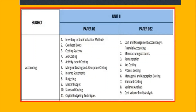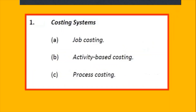Now we'll look at the costing systems and include income statements in that. We'll be looking at this in terms of traditional costing systems and new costing systems. The only new costing system here is Activity Based Costing. Job costing, marginal, and absorption costing are the traditional costing systems. ABC is seen as a topic by itself.